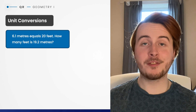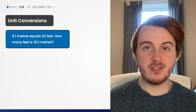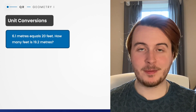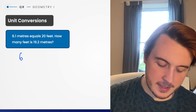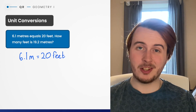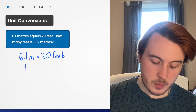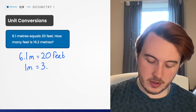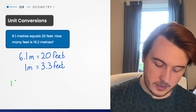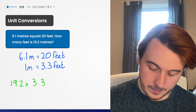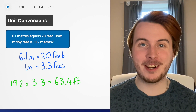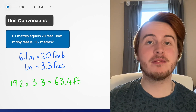When simplifying conversions, there's no always easy starting point. For example, if we have 6.1 meters equals 20 feet, that's not as clean as having one on a side. So divide both sides by 6.1 to get 1 meter, then use a calculator to get 3.3 feet — which you'll remember from an earlier question. Then 19.2 meters times 3.3 equals 63.4 feet. Always try to get your unit conversion into a format you can understand before applying it.